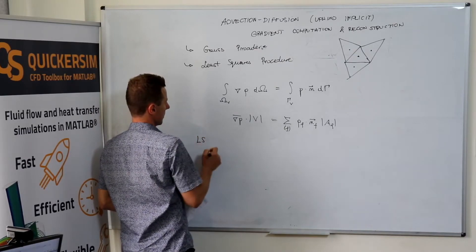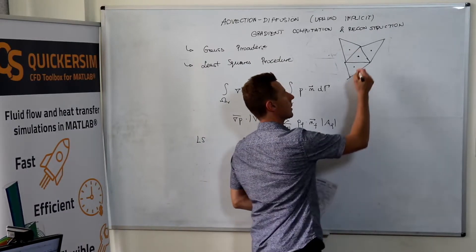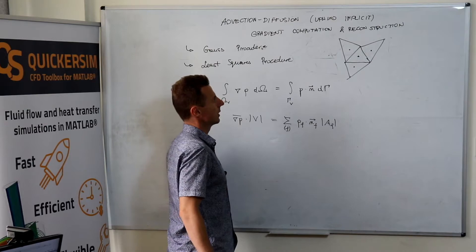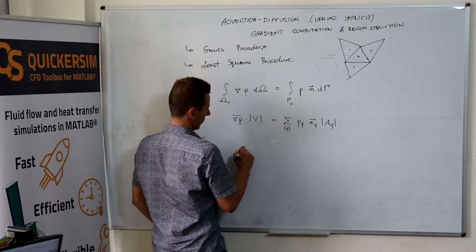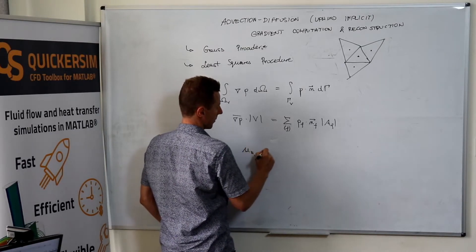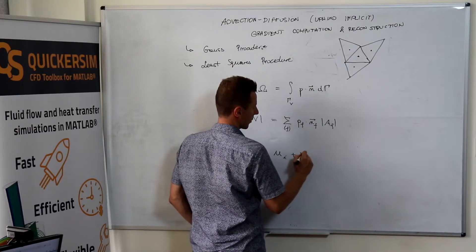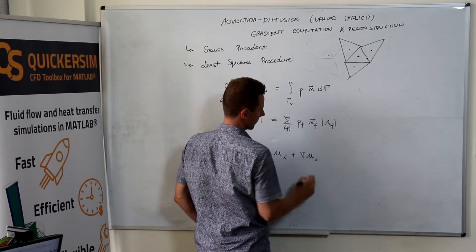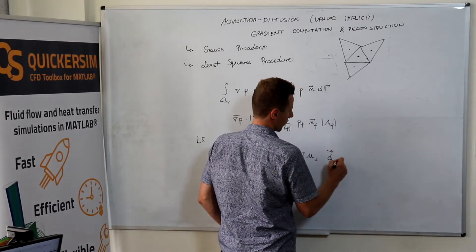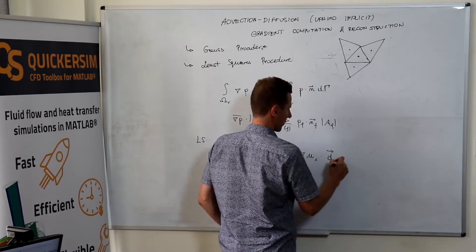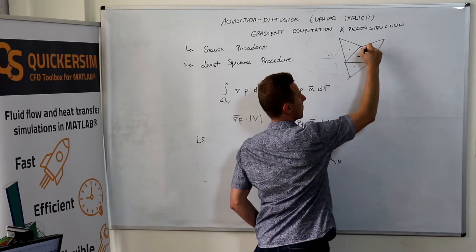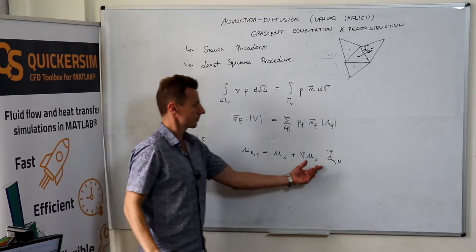The Least Squares procedure, what would it be? For the Least Squares procedure, we need to use the directional derivative. So basically, we need to remember that U can represent U at the neighboring cell by saying, okay, that's my value, plus gradient of U at my location, times the vector connecting me with the neighboring cell. Let this be vector pointing from my location to the specific neighbor.